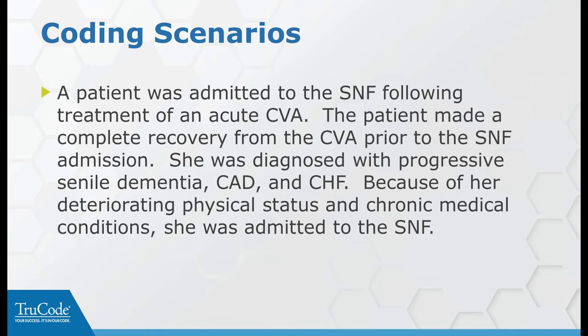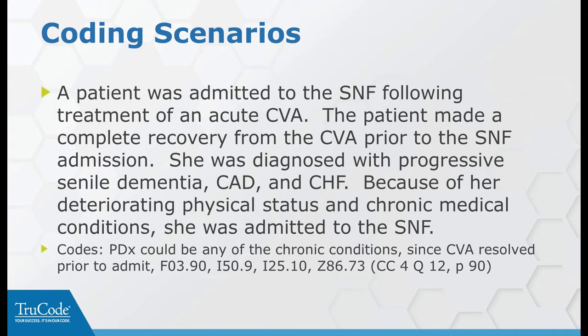Another SNF scenario: a patient came to the skilled nursing facility after treatment of an acute CVA and made a complete recovery from the CVA prior to admission. She was also diagnosed with progressive dementia, CAD, and CHF, and was admitted to the skilled nursing facility due to her deteriorating status and chronic medical conditions. In this case, the principal diagnosis could be any of those chronic conditions because the CVA was resolved in the short-term hospital with no residuals. There's no I-69 category code to use, so the codes are: F-03 for dementia, I-50 for heart failure, I-25 for CAD, and Z-86 to show history of CVA without any residual deficits.